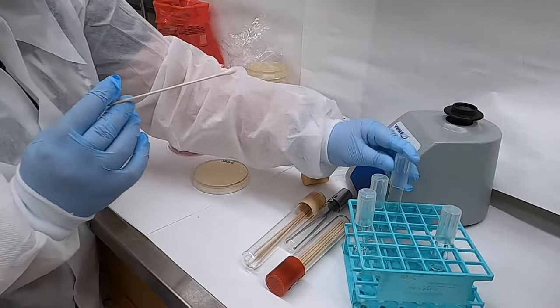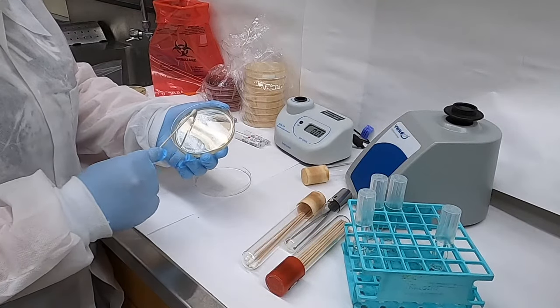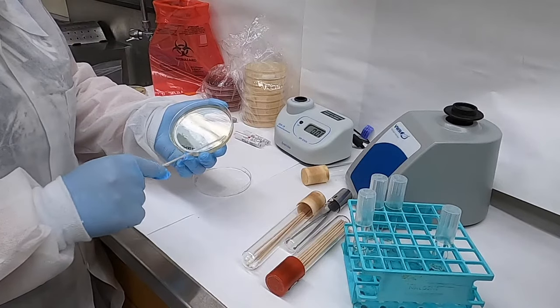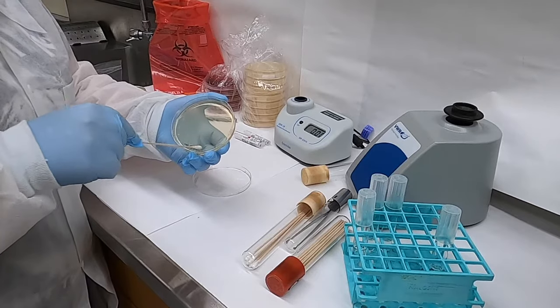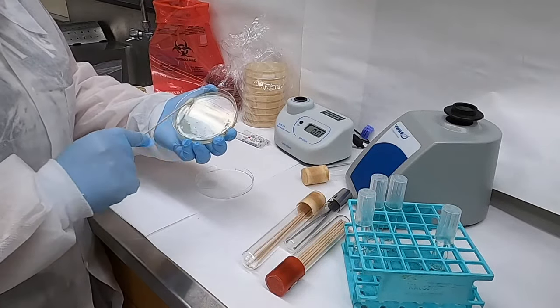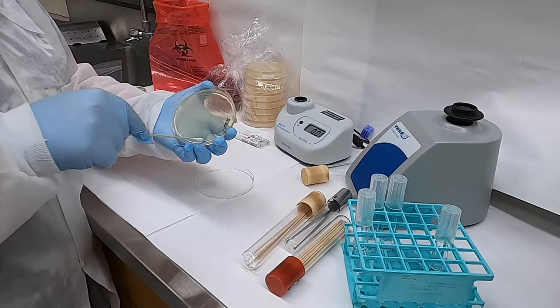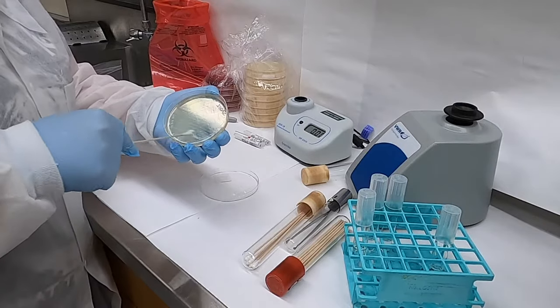This swab is then used to plant a lawn of bacteria over the entire agar surface. As you can see here, we spread the swab from side to side, rotating it, covering the entire surface of the agar plate. The plate is then rotated 60 degrees and that swabbing repeated, and then that's repeated for a third time just to ensure that we have a homogeneous lawn of organisms.